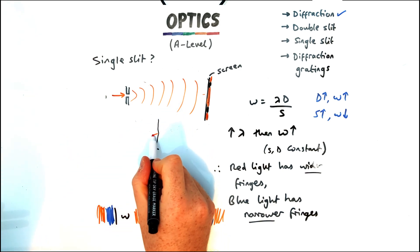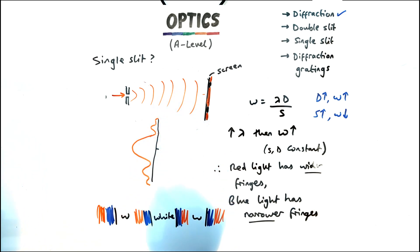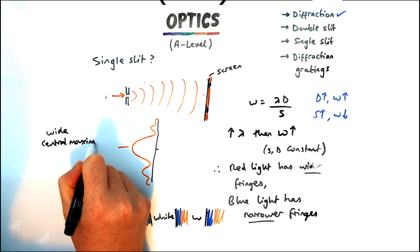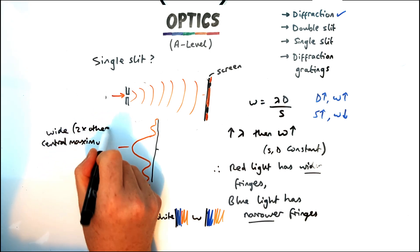Well you do but you do have these smaller fringes either side of it so the intensity of the wave would look a little bit like this. So in the centre you'd have a really big peak, big maximum and then you'd have these smaller dark and bright patches either side of it.